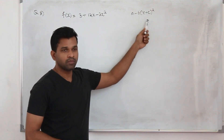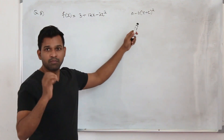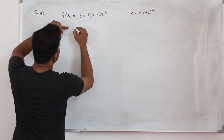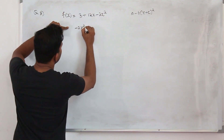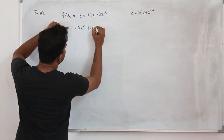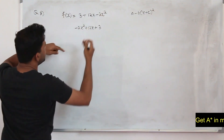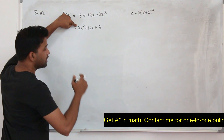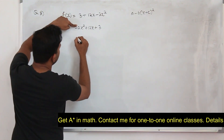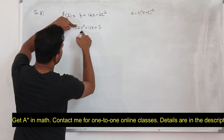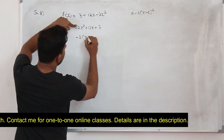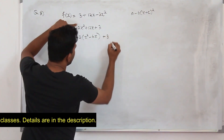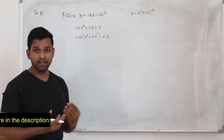We are going to apply completing the square. Take this function: -2x² + 12x + 3, written in standard form. The coefficient of x² can be any number — take that number out from the first two terms, giving -2(x² - 6x) + 3.